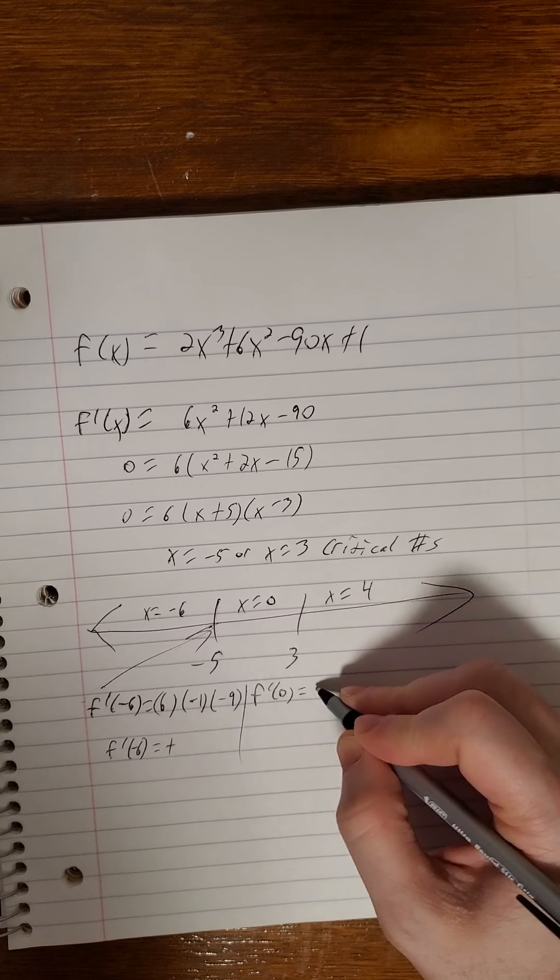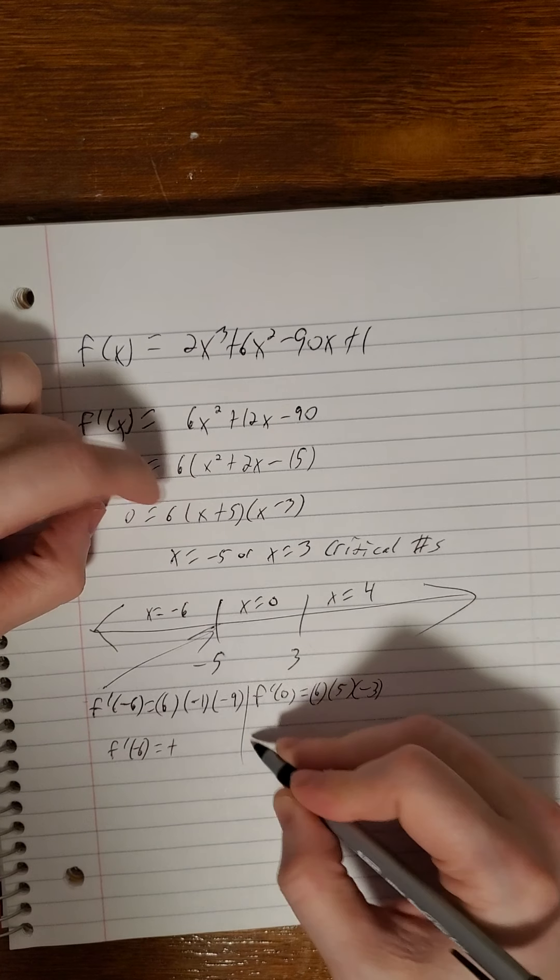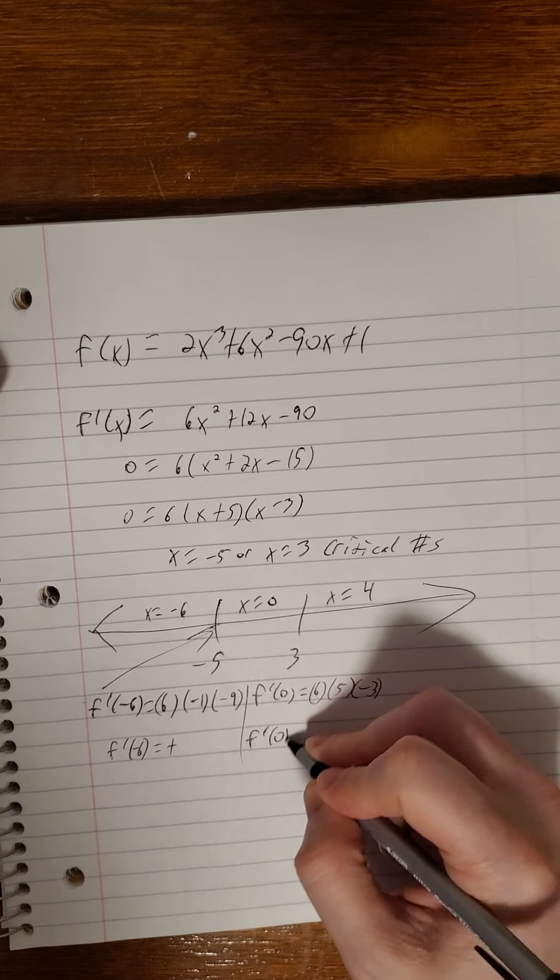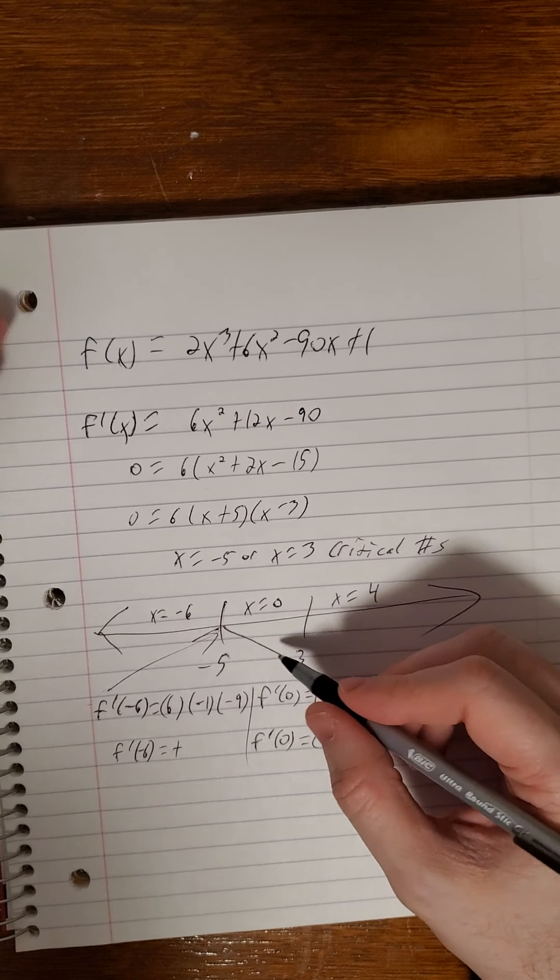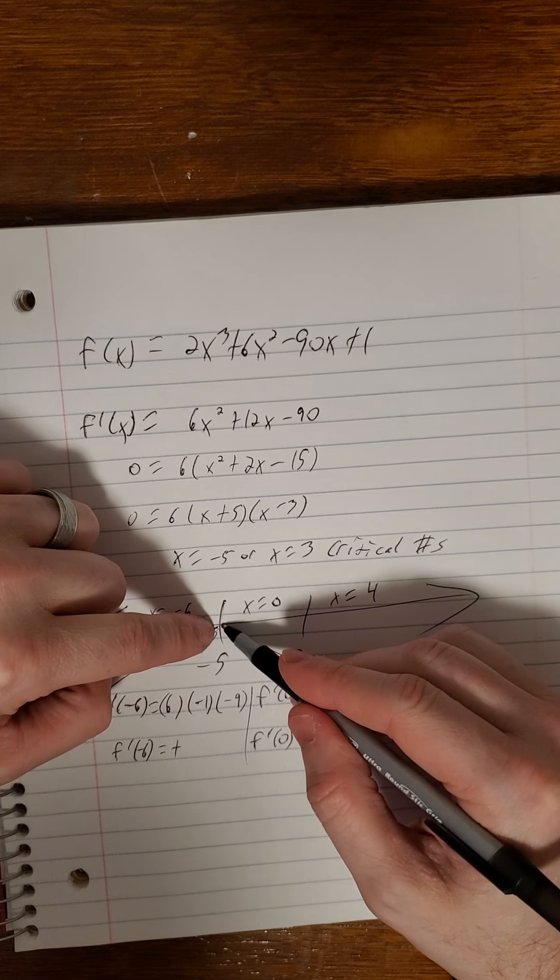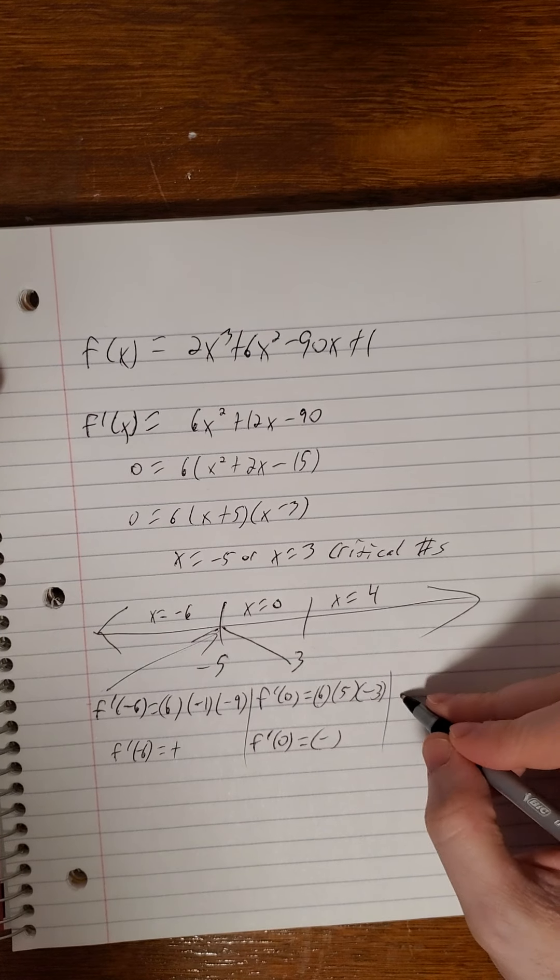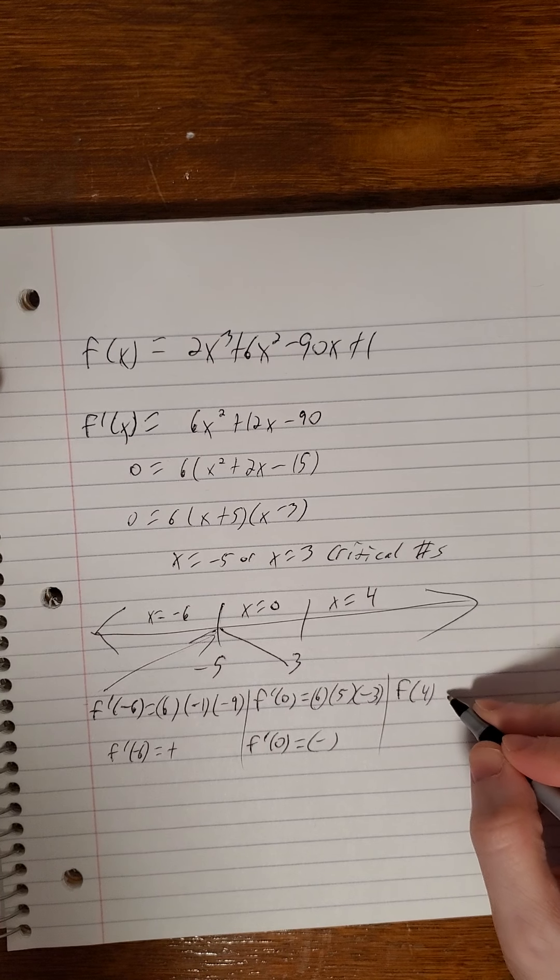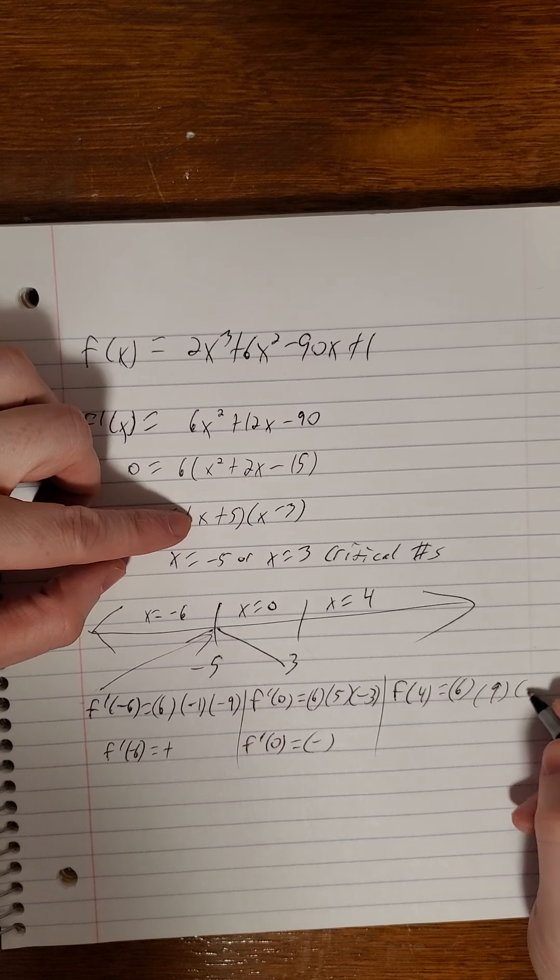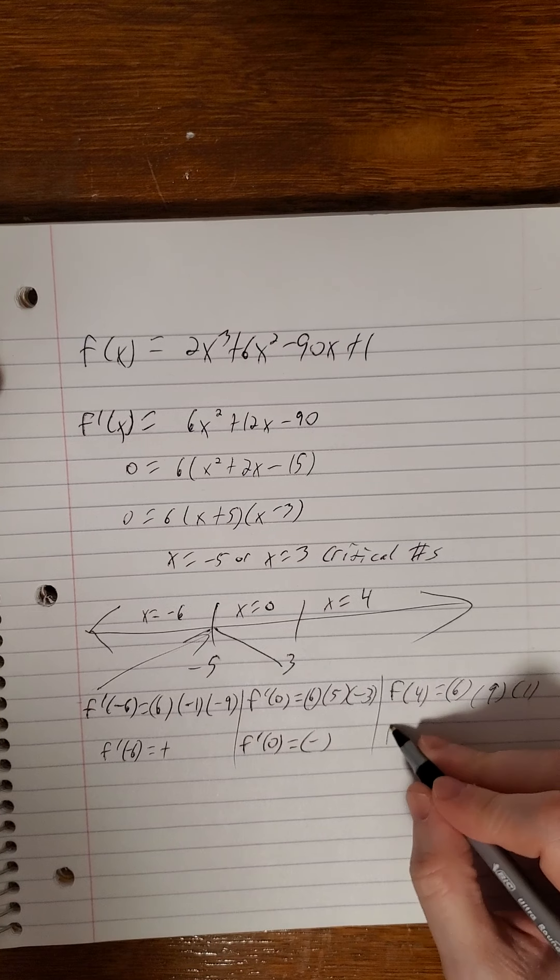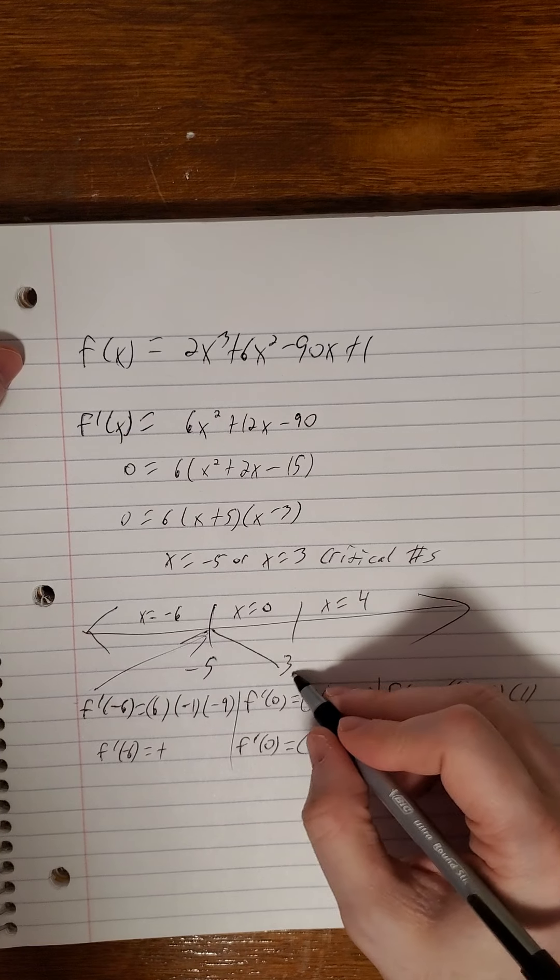f prime of 0, we have a positive 6 by a positive 5 by a negative 3. That is a negative. So I know we are decreasing on that interval. So we have a local max at negative 5. And finally, we finish out with f of 4. So positive 6 by positive 9 by positive 1. That is positive. So we're back to increasing.